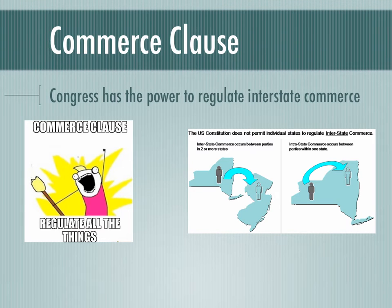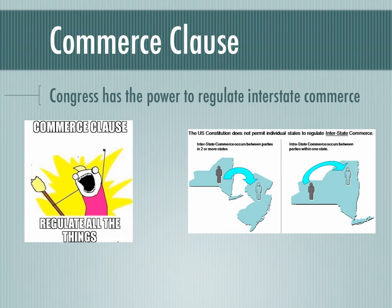Thirdly, we have the Commerce Clause, which is maybe the easiest one. It gave Congress the power to regulate interstate commerce. Commerce is anything having to do with trade or money — interstate money, trade, jobs, companies, work, driving across state lines, anything. Interstate means between states. So if you cross state lines and you are doing something illegal, that becomes a federal crime. Congress has the power to regulate anything that has to do with more than one state, which gives Congress a lot of power.